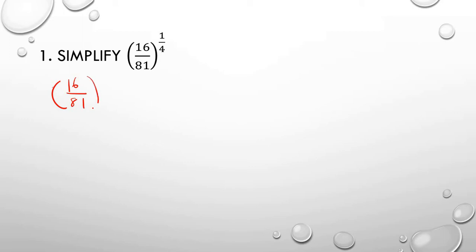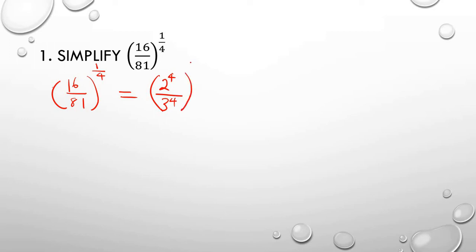We'll start with this question: open the brackets, 16 over 81, raised to the fractional index 1 over 4. We'll reduce the bracket to index form: 16 is 2 to the power 4, and 81 is 3 to the power 4. Remember to raise it to the given power 1 over 4.